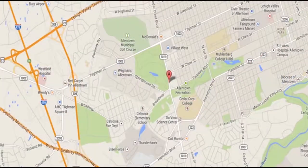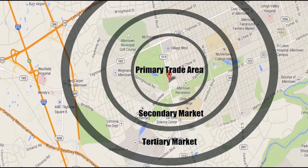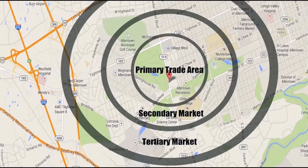The trade area is the area from which the majority of shoppers to a center come from, and it's comprised of three markets. The majority of customers come from a primary market. A secondary market is made up of those shoppers coming from a further distance, and a tertiary market for those consumers who potentially travel a significant distance for a specialty store or some particular product.